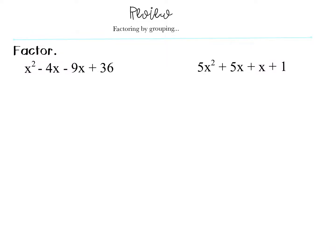So we're going to do a quick review of factoring by grouping. When we factor by grouping, the first thing we want to do is make sure that we have four terms. If you notice, this has four terms - one, two, three, and four - and so we're simply going to group them into two binomials.